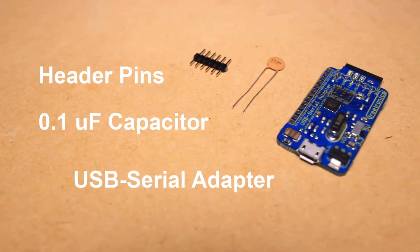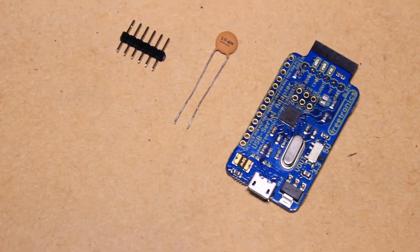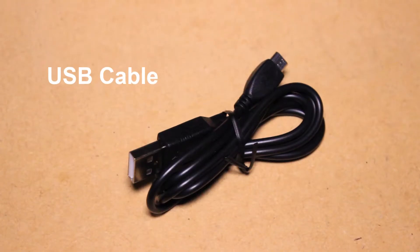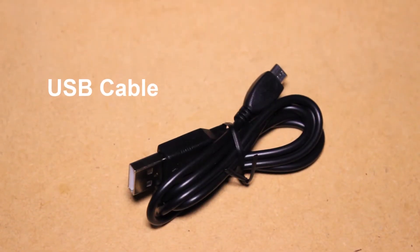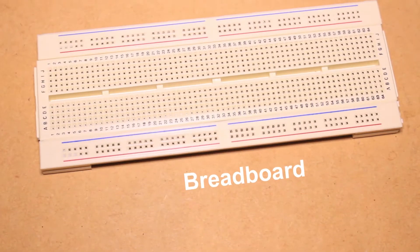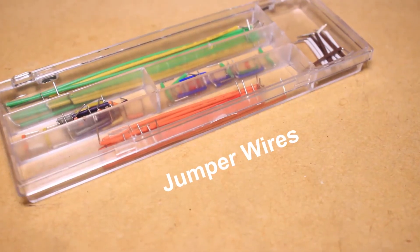You'll also need some header pins, a 0.1µF capacitor, a USB to serial adapter to program the IC, an appropriate USB cable, a breadboard, and some jumper wires.